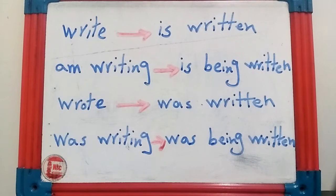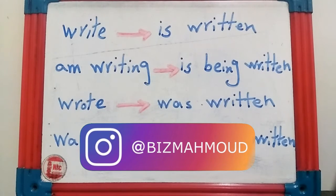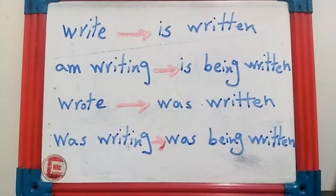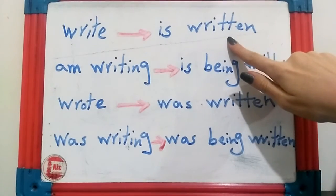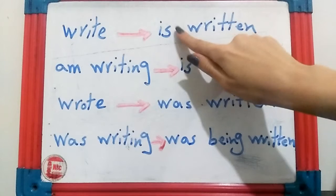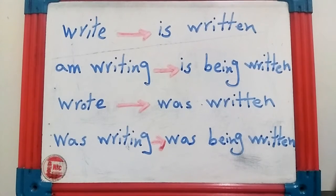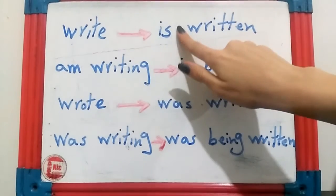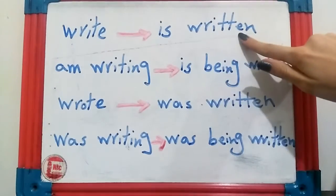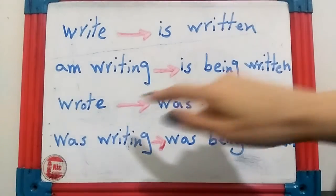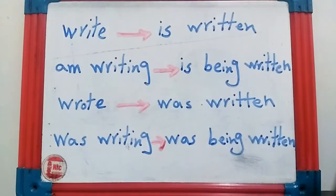Now let's learn how to change an active verb to a passive verb. We've learned the general structure for converting active sentences to passive. Now how do we convert active verbs tense by tense? The first one is present simple: 'write' becomes 'is written.' The structure is: am / is / are + past participle of the verb.